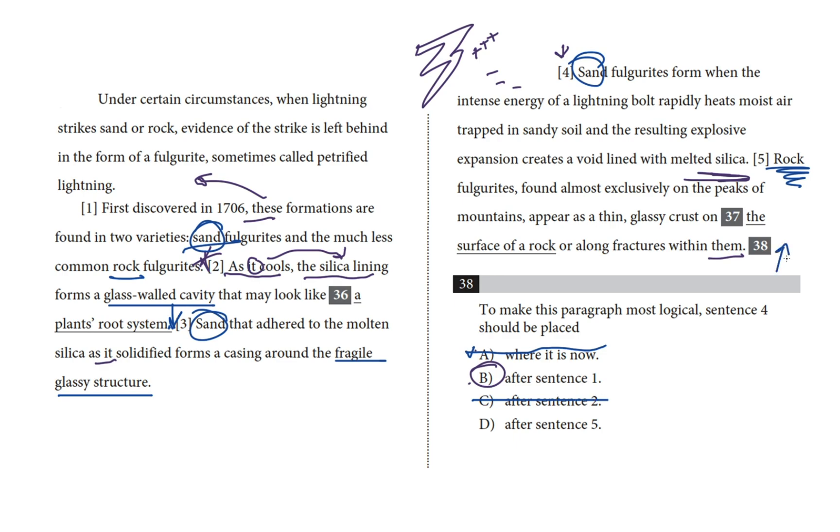Choice D, after sentence five here, introduces sand fulgurites after the rest of the paragraph is done talking about the sand kind and has moved on to the rock kind. So that's not logical either.